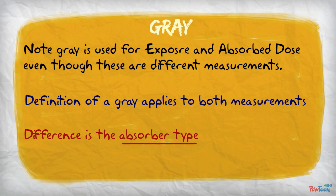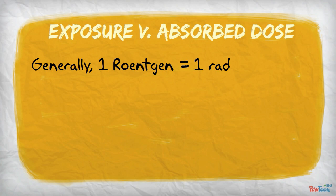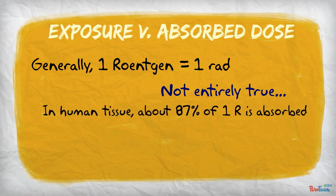Let's look closer at exposure and absorbed dose. Generally, in dosimetry, we can consider 1 Röntgen to be equal to 1 rad. However, in human tissue, about 87% of the energy of 1 Röntgen is absorbed. Therefore, the exact equivalent is 0.87 Röntgen is equal to 1 rad.